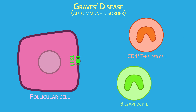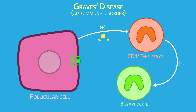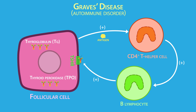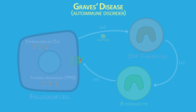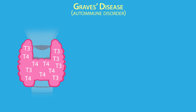Graves' disease begins when thyroid-specific antigens activate CD4-positive T helper cells, which in turn stimulate B lymphocytes to produce antibodies against the TSH receptor. Antibodies against thyroglobulin and thyroid peroxidase are also often seen in Graves' disease patients, but these are not specific to Graves' disease.